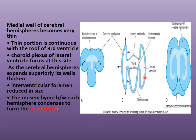The choroid plexus of the lateral ventricle forms at the roof of the third ventricle. Later, the size of the interventricular foramen reduces and the mesenchyme between each hemisphere condenses to form the falx cerebri.